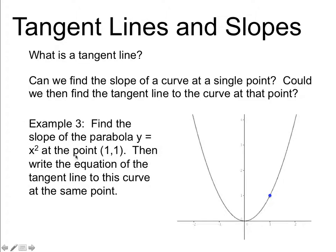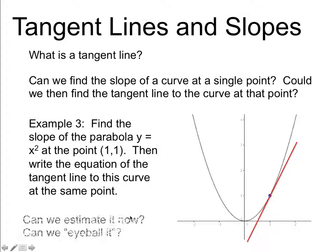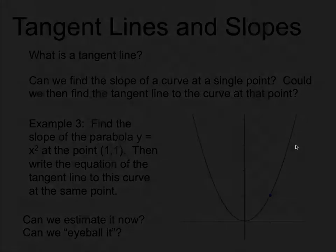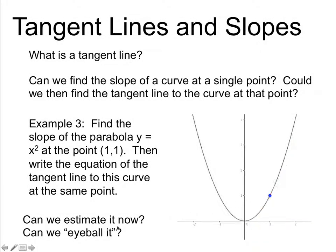Let's start with a simple parabola, x squared, and the point (1, 1). I want to write the equation of a tangent line at this curve. Because it only touches in one location, I can't do a rise or run since I don't have a second point. So let's start by estimating. Going up 2 and right 1, we can estimate the slope is about 2. We could eyeball it and get close, but we want to get exact.